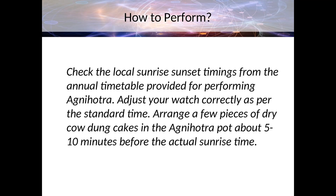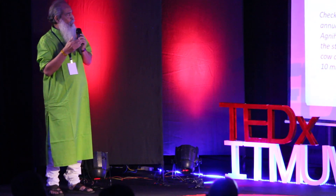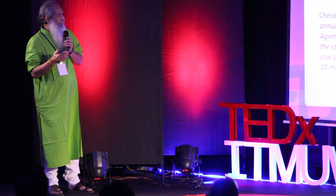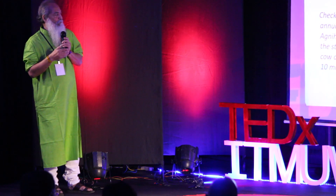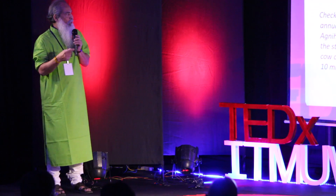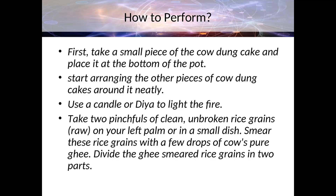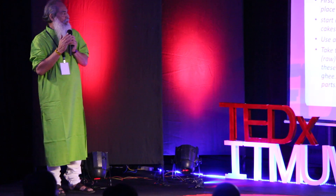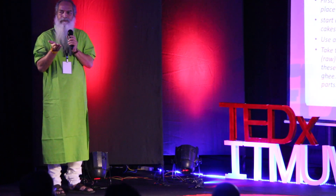How to perform Agnihotra: Check local sunrise and sunset timings from the annual timetable provided for performing Agnihotra — there are enough Agnihotra timetable sites on the internet today. Adjust your watch correctly to standard time. Arrange a few pieces of dry cow dung cakes in the Agnihotra pot about five to ten minutes before the close time. Take a small piece of cow dung cake and place it at the bottom of the pot, then arrange other pieces around it neatly. Use a candle or fire to light it. Take two pinchfuls of clean unbroken rice grains, smear them with a few drops of cow's pure ghee, and divide them into two parts for two mantras.